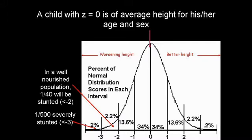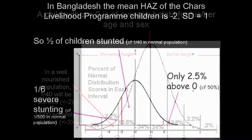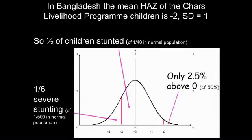Now switch to the Chars — where we've just done some surveys I'll discuss in more detail later. The average value there is no longer zero, it's minus two. So in that population of children, half the population are stunted, compared to one in forty in a normal population. And a staggering one in six is showing severe stunting, compared to one in five hundred in a normal population. Only a mere minority are above the zero position.